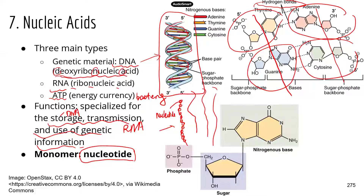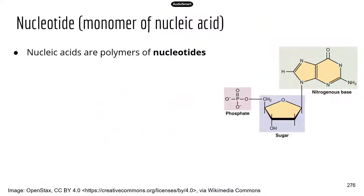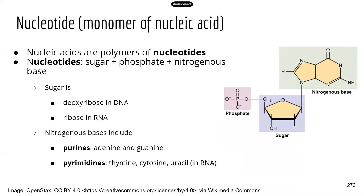Now let's look at the structure of each nucleotide more closely. There are three components in each nucleotide. The first component is phosphate — PO4, that's the phosphate group. There's not too much to say about it, but it does carry a negative charge, which makes DNA negatively charged. So DNA molecules as a whole are usually negatively charged.